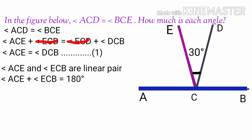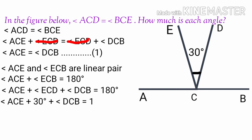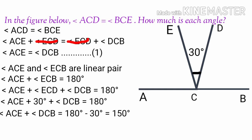Angle ECB is equal to angle ECD plus angle DCB. Therefore, angle ACE plus angle ECD plus angle DCB is equal to 180 degrees. Since angle ECD is 30 degrees, substituting gives angle ACE plus angle DCB is equal to 180 minus 30, which is equal to 150 degrees.